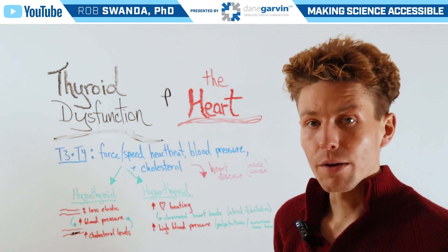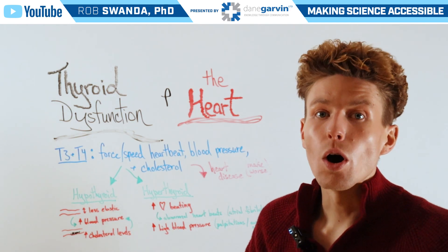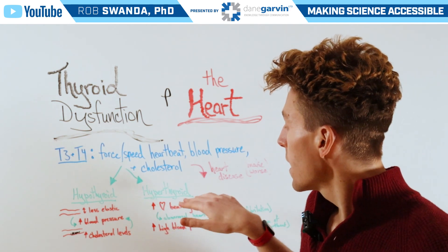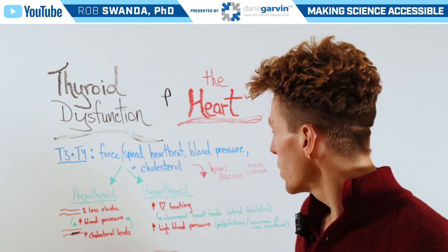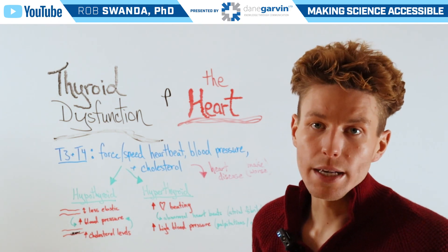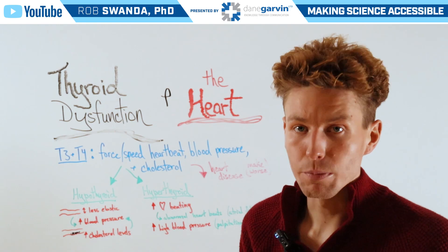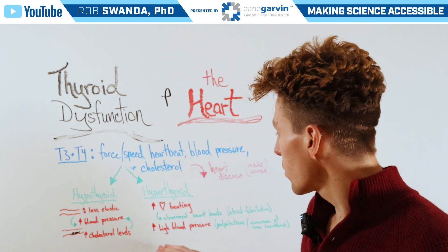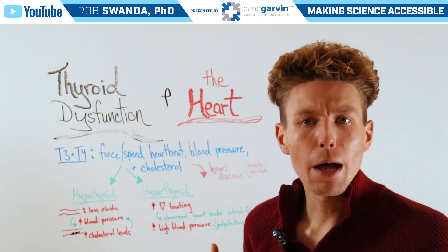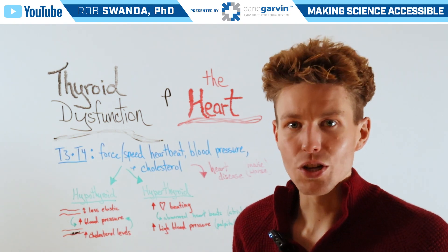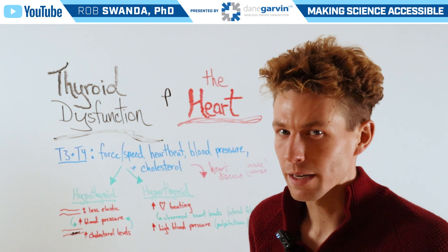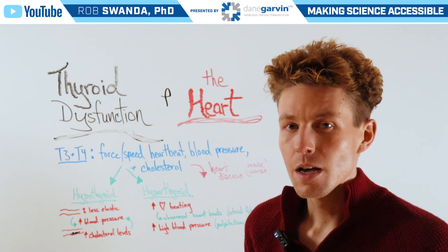But in hyperthyroidism, or an overactive thyroid, we may experience increased heartbeats, which could lead to abnormal heartbeats, or something known as atrial fibrillation. Additionally, there can be an increase in blood pressure, as well as palpitations, or somebody beginning to notice that their heart is actually beating at random times.